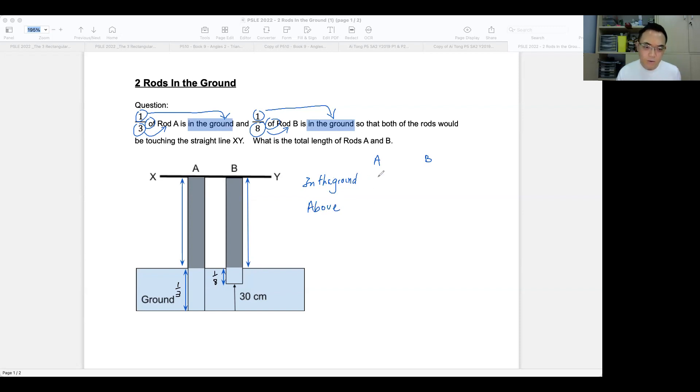So for rod A, since 1/3 is in the ground, then how much is above the ground? Okay, 2/3. Very good. And for rod B, if 1/8 is in the ground, what fraction is above the ground? Yes. 7/8. Very good.